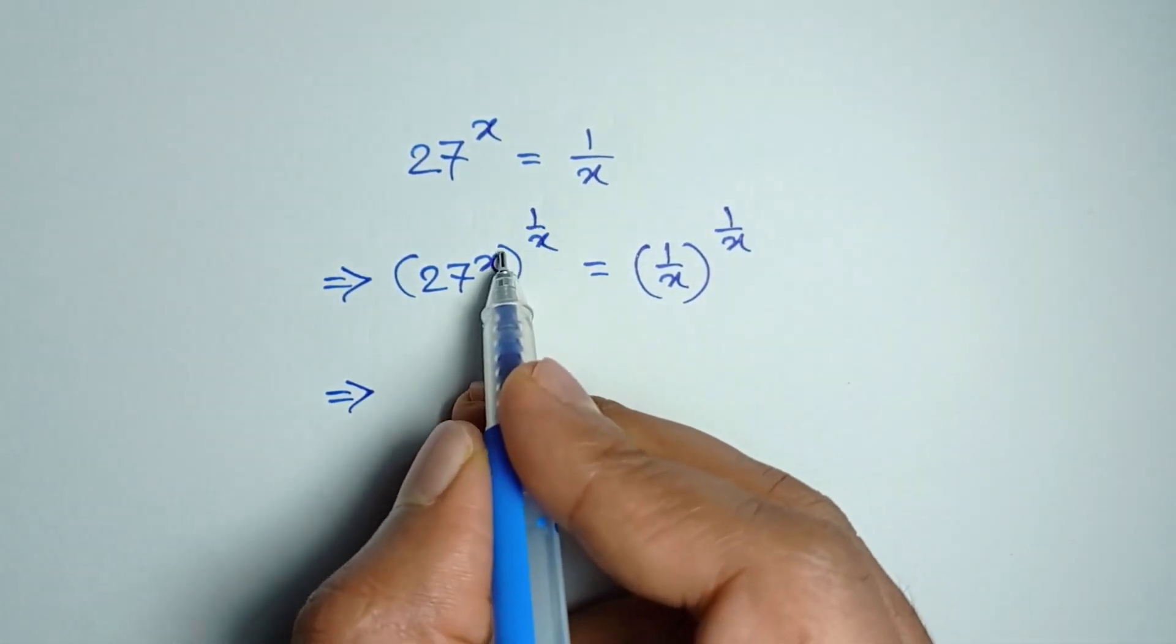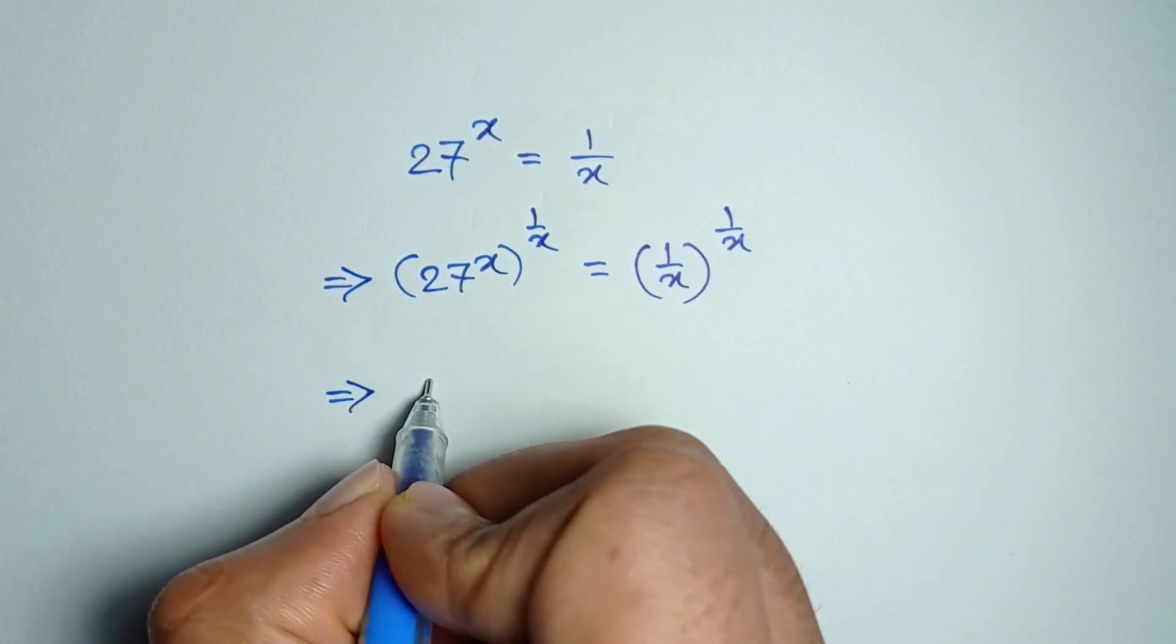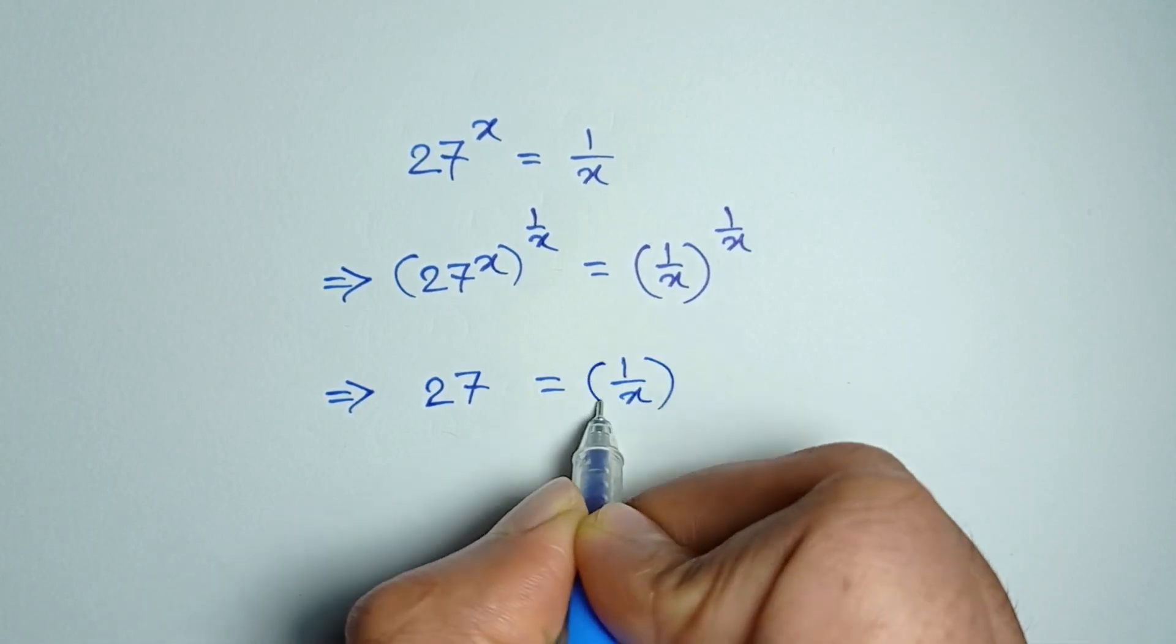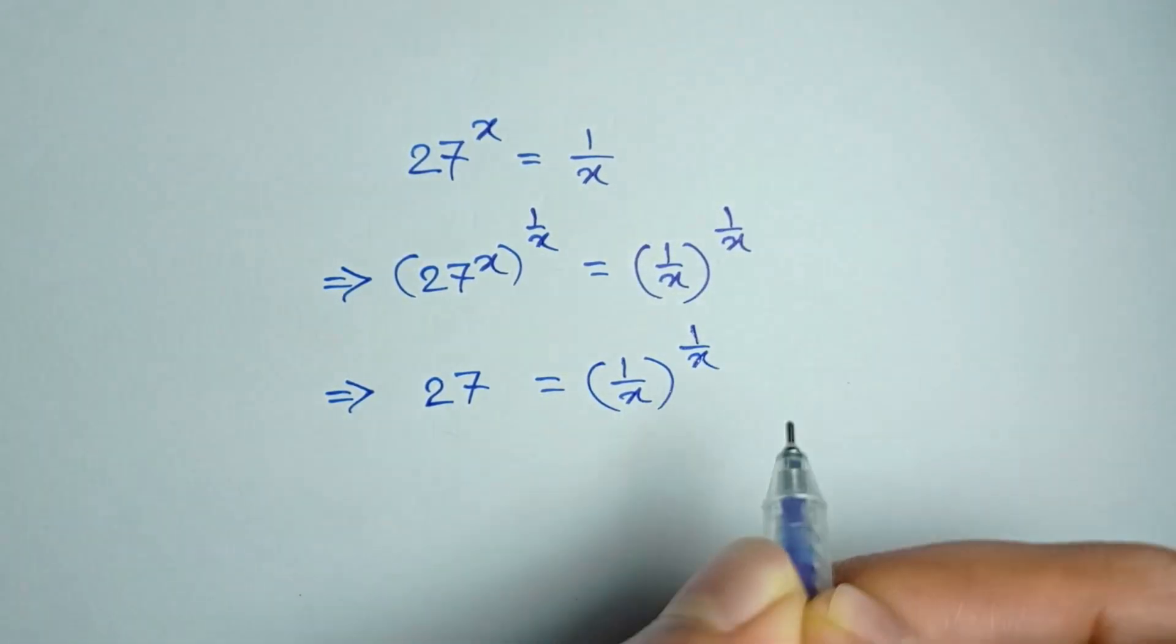Now x and 1 by x cancel out, we get 27 is equal to 1 divided by x whole to the power 1 divided by x.